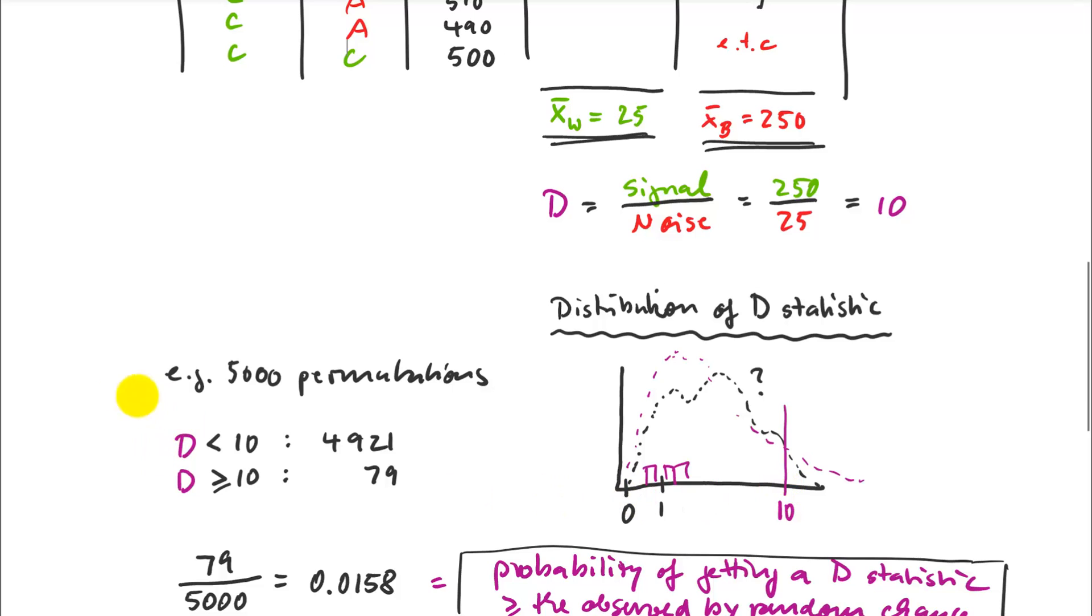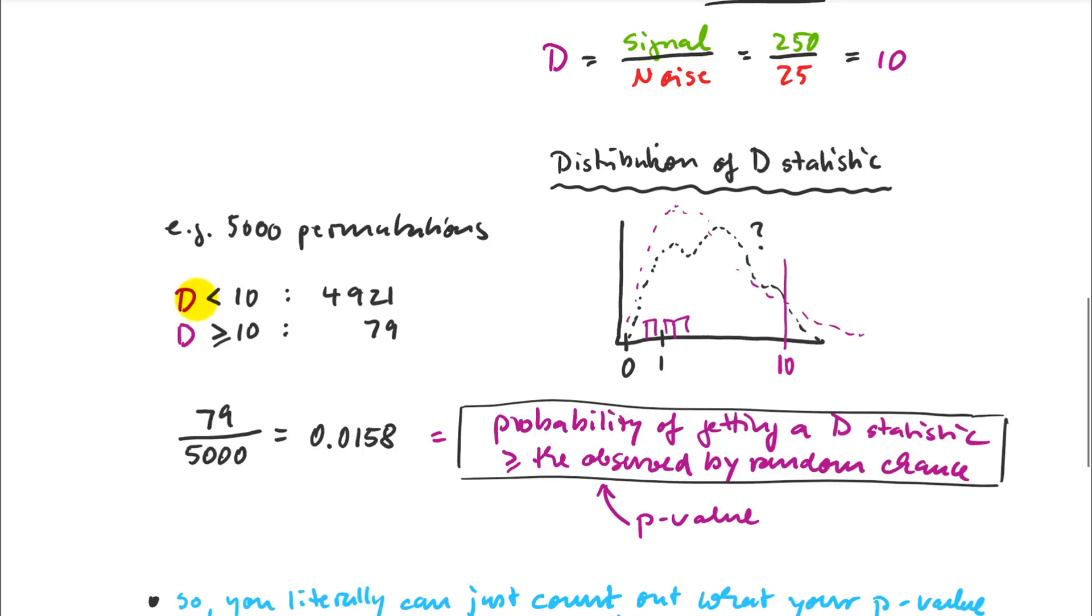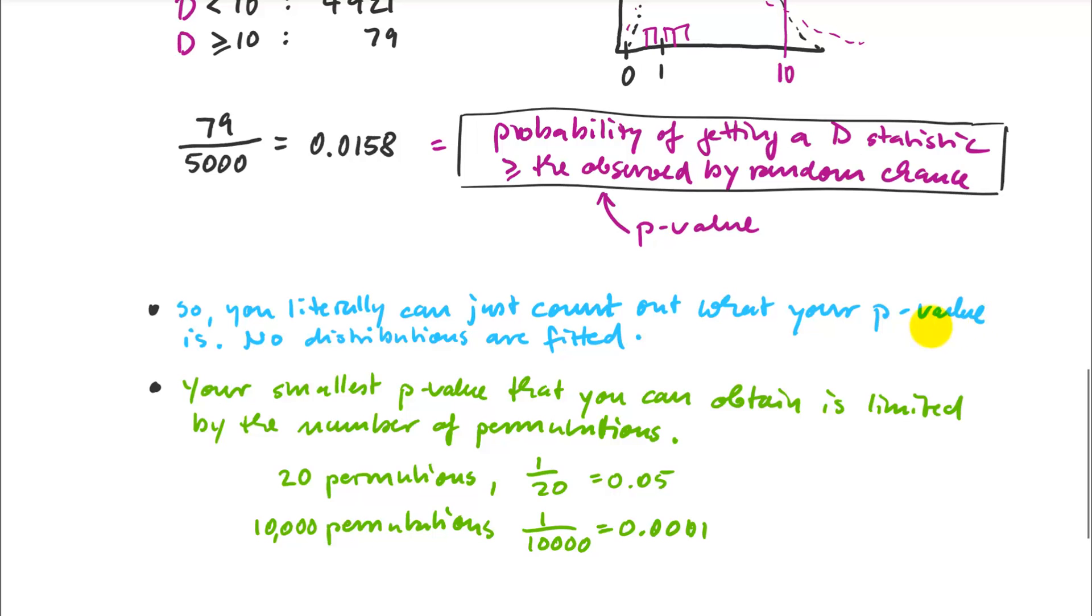So if I do this for 10,000 permutations, on the computer that takes less than a second, I can calculate how many of my randomly generated d values, so my kind of F statistics were smaller than this 10 here. So this is probably the majority. But there may be some that just by random chance are larger than 10. And then I have my p-value. So I can say, what's the probability of getting a d statistic as large or larger than the observed one just by random chance. So in this case, it would be 79 over my 5000 permutations. So 79, I got a value as big or bigger just by random chance. So that's pretty cool. And you will see this works perfectly. It gives you exactly the same answer as a normal analysis of variance. So you can literally just count out your p-value. There's no distributions that need to be fitted. There's no assumptions here about anything. That's really a very elegant solution.